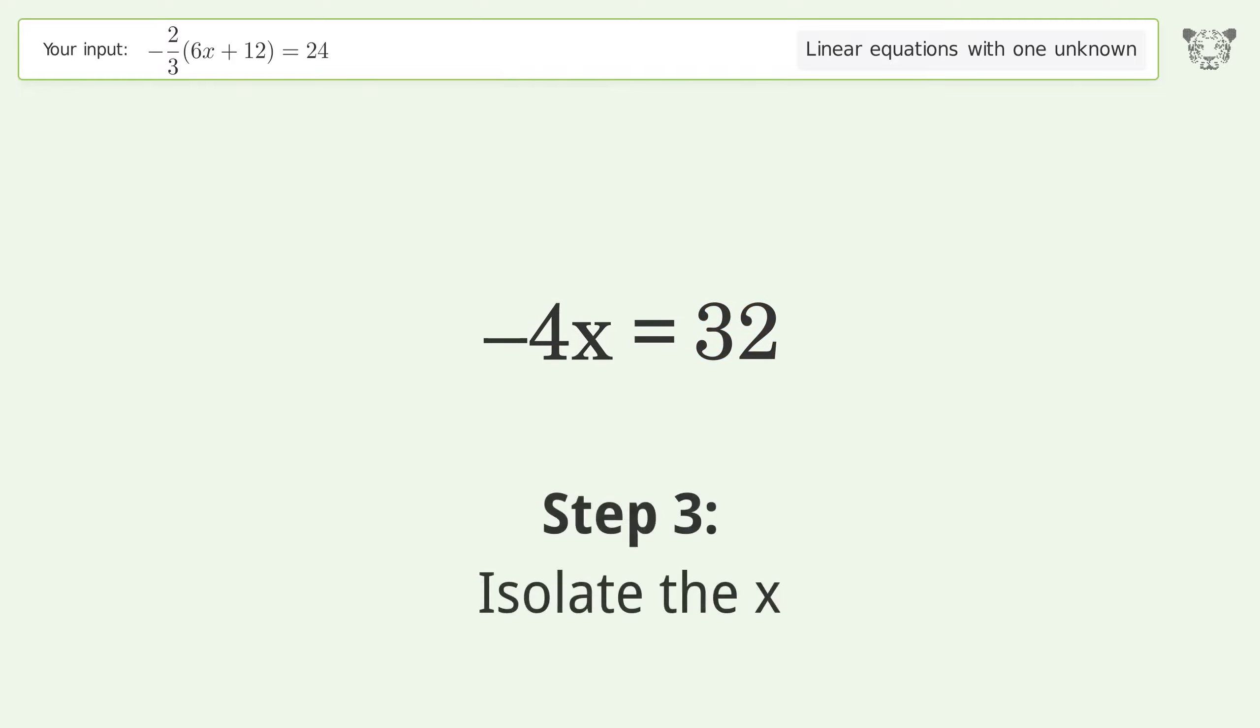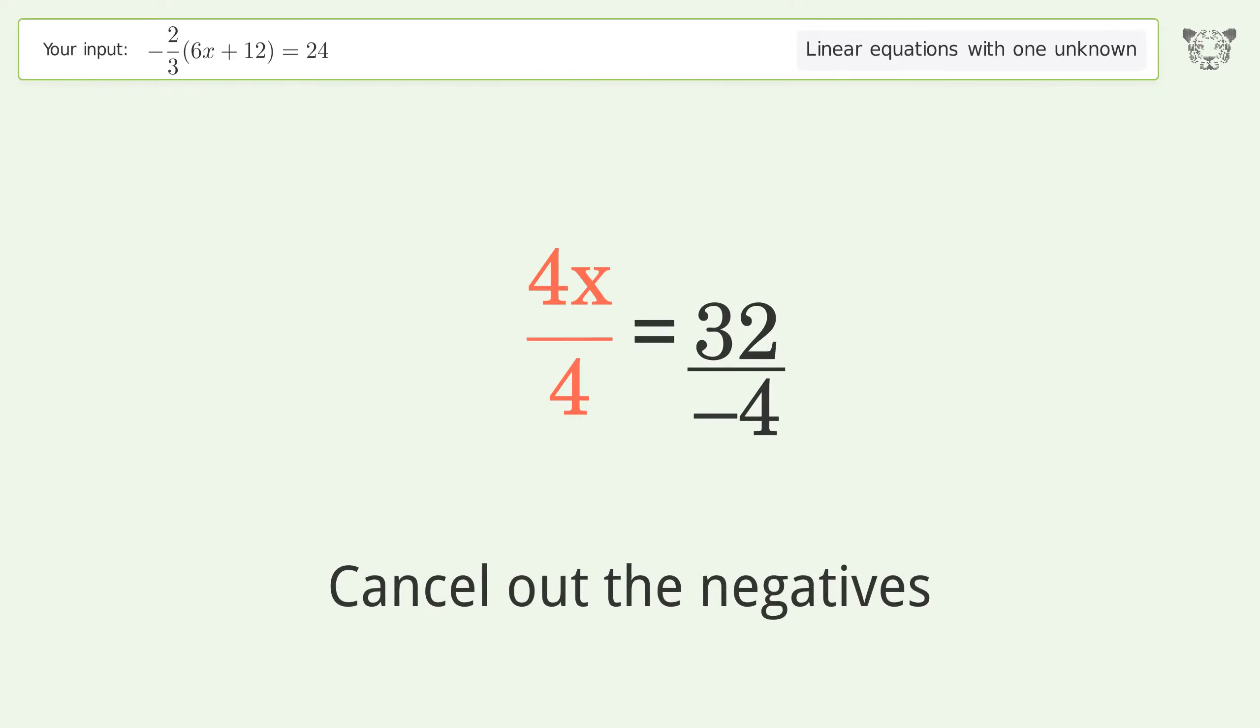Isolate the x. Divide both sides by negative 4. Cancel out the negatives. Simplify the fraction.